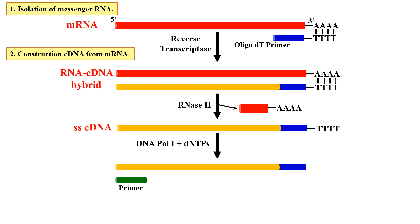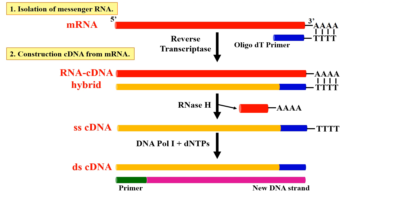This DNA polymerase enzyme now makes another strand of the DNA by using this single-stranded cDNA molecule as a template. For this, we have to provide the primer, and this primer can be extended throughout the length of the previous strand. Now you will have the new cDNA molecule which is double-stranded, as you can clearly see in this diagram. This cDNA molecule is now double-stranded.